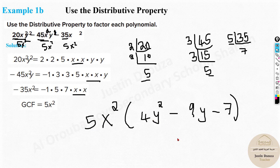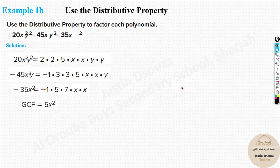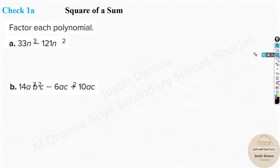To recap the method: for all numbers, factor starting from the lowest — begin with 2 if it's even, then try 3 or 5 until you reach prime numbers like 2, 3, 5, 7. Find what's common — here 5 and x² were common — remove the GCF, and divide all terms by it. You're left with 4y² - 9y - 7.